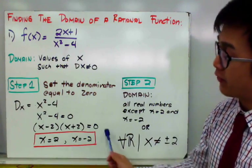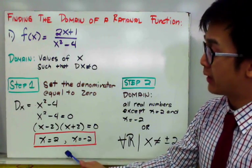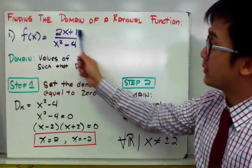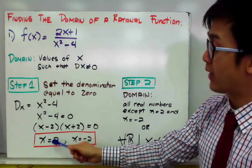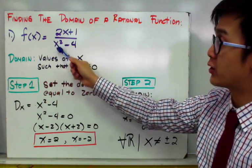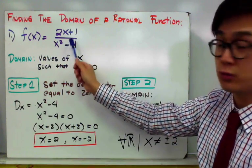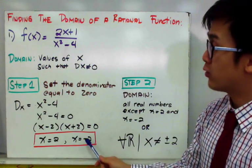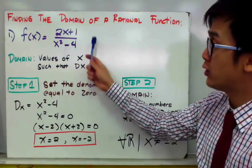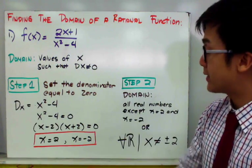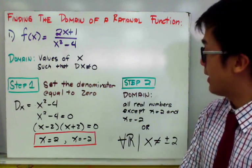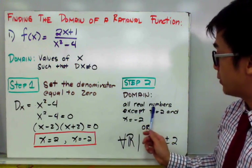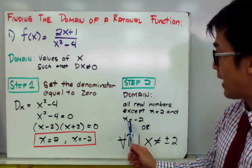These values of x are the ones we need to stay away from so that our rational function will exist. Because if x is equal to 2 and you plug it into the denominator, the denominator will turn into 0, making the function undefined. The same case applies for x is equal to negative 2. Therefore, the domain of our rational function is all real numbers except for x is equal to 2 and x is equal to negative 2.